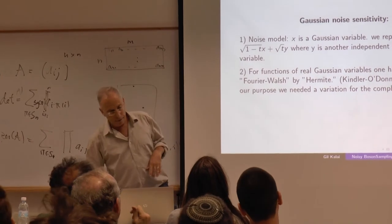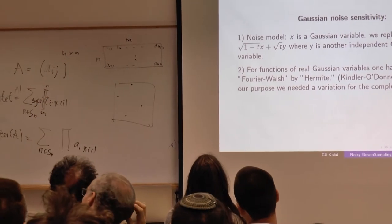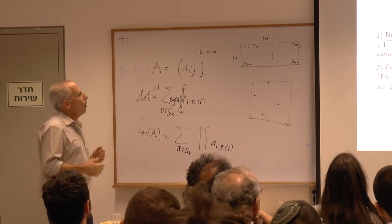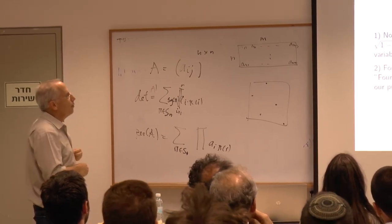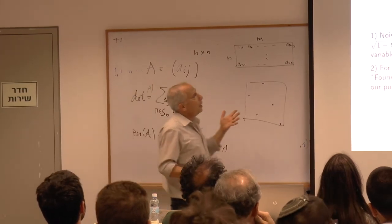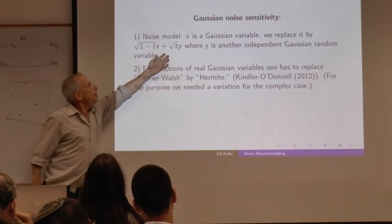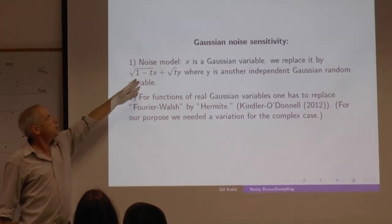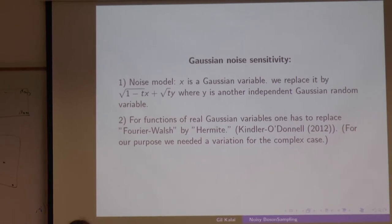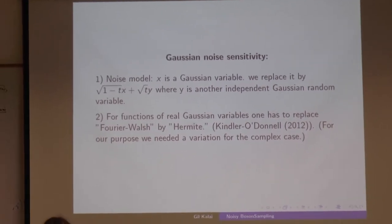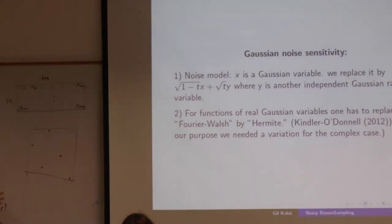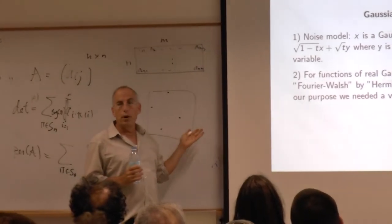In a 2012 paper by Guy Kindler and Ryan O'Donnell, the basic setting is that x is a Gaussian variable and we replace it by a combination of itself with another independent Gaussian variable: √(1-t)·x + √t·y, where t is the level of noise. The harmonic analysis used here replaces Walsh polynomials with Hermite polynomials. Some aspects are actually easier, some not so easy.